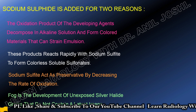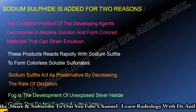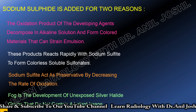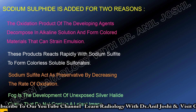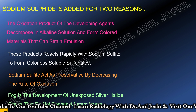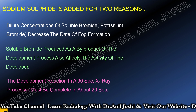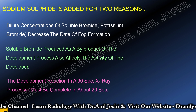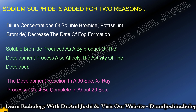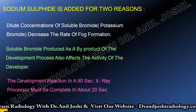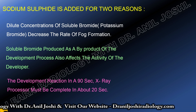Sodium sulfite acts as a preservative by decreasing the rate of oxidation. Fog is the development of unexposed silver halide grains that do not contain a latent image — they are disturbing and reduce the clarity of the image. Sodium bromide is added because dilute concentrations of soluble bromides decrease the rate of fog formation. Fog is our enemy — it reduces the accuracy of the image.